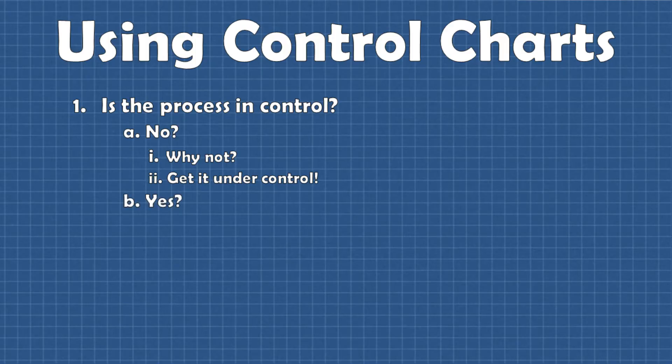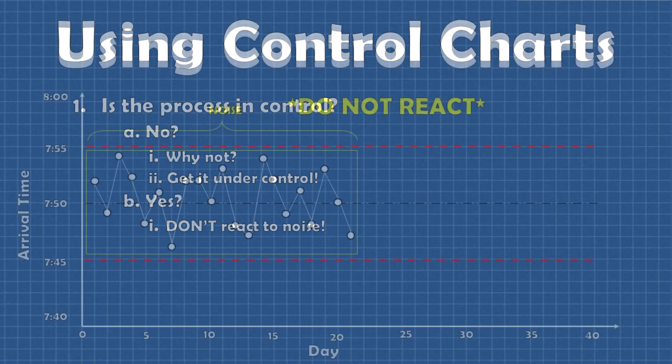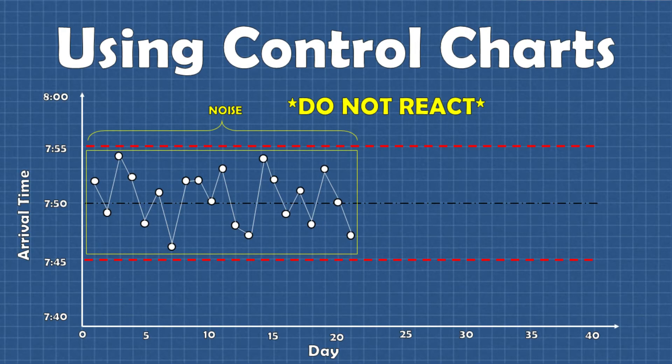So if we do have a process that is generally in control we will be able to determine the signal from noise and that is very important because we do not want to react to noise. Again this is because noise is caused by all those variations that are natural to the process. If we tried to reduce this variation it would be at best a waste of resources and at worst we could actually add more variation into the process.